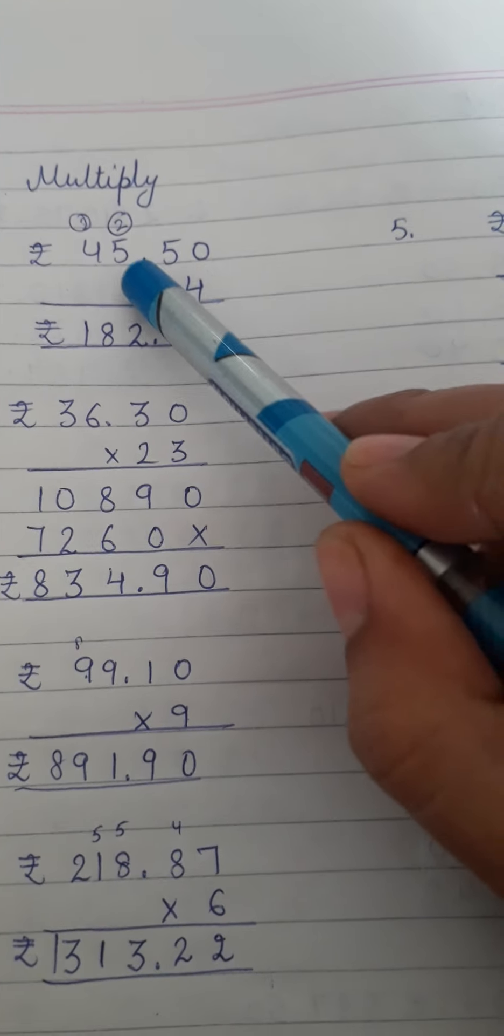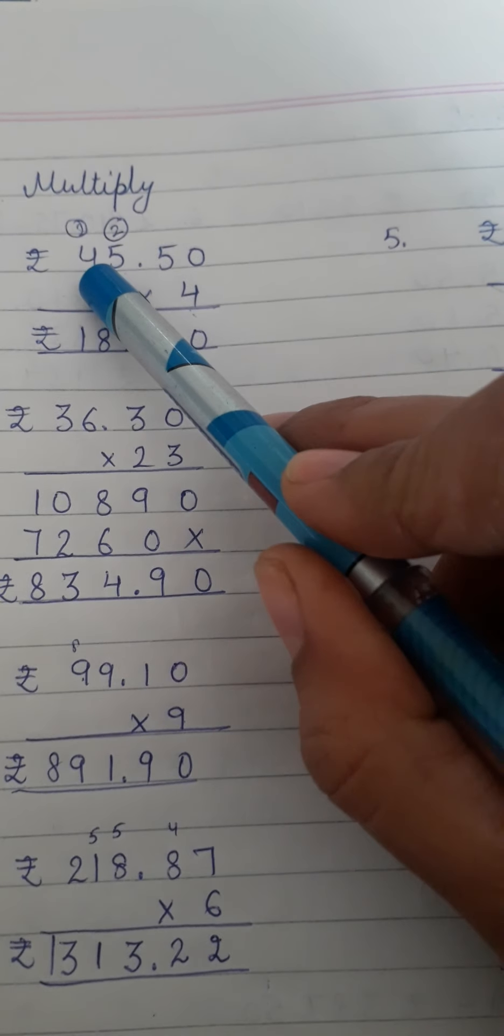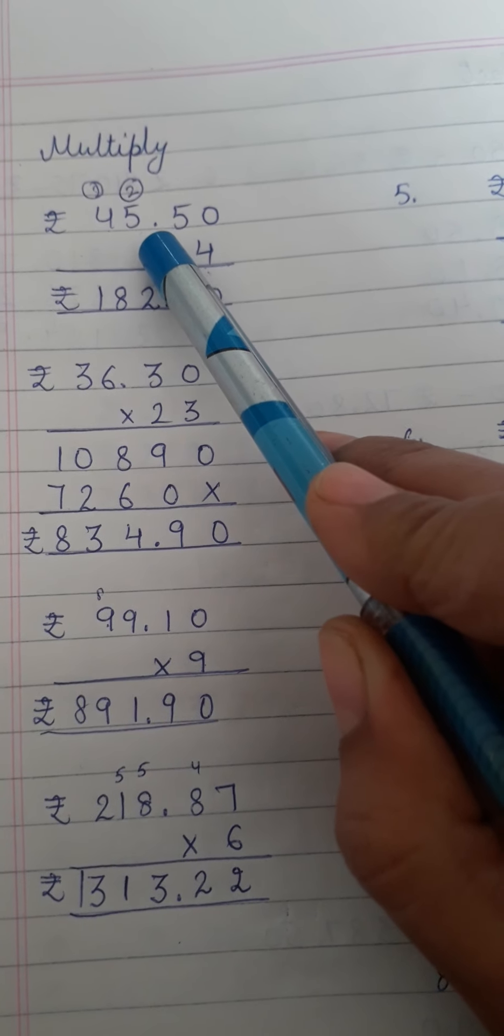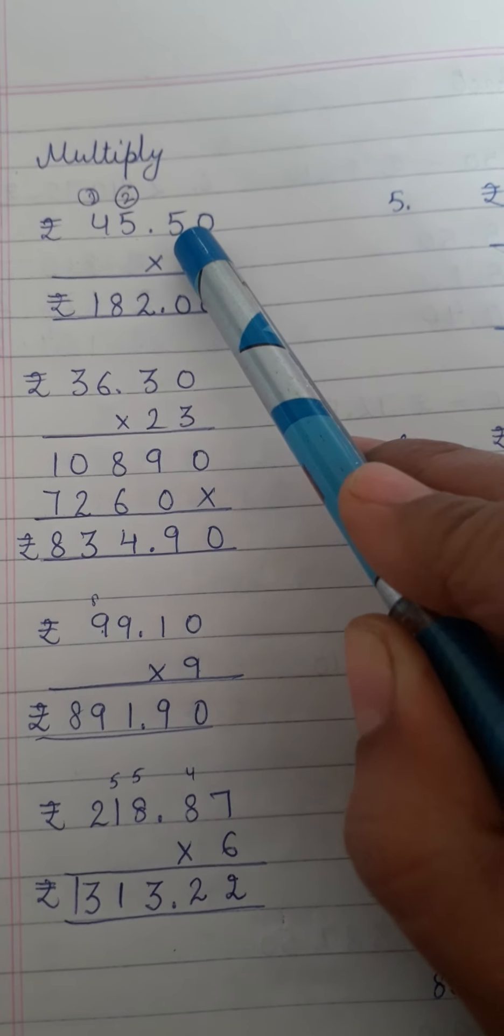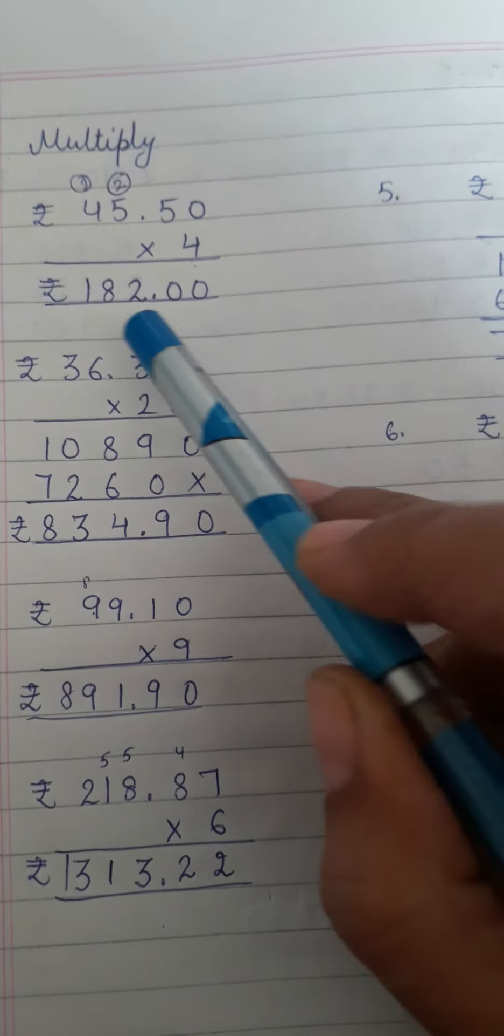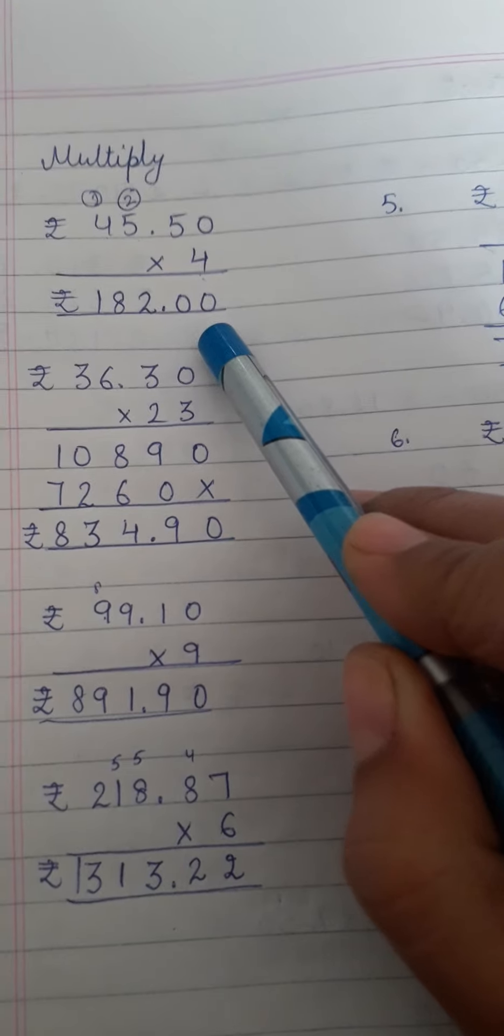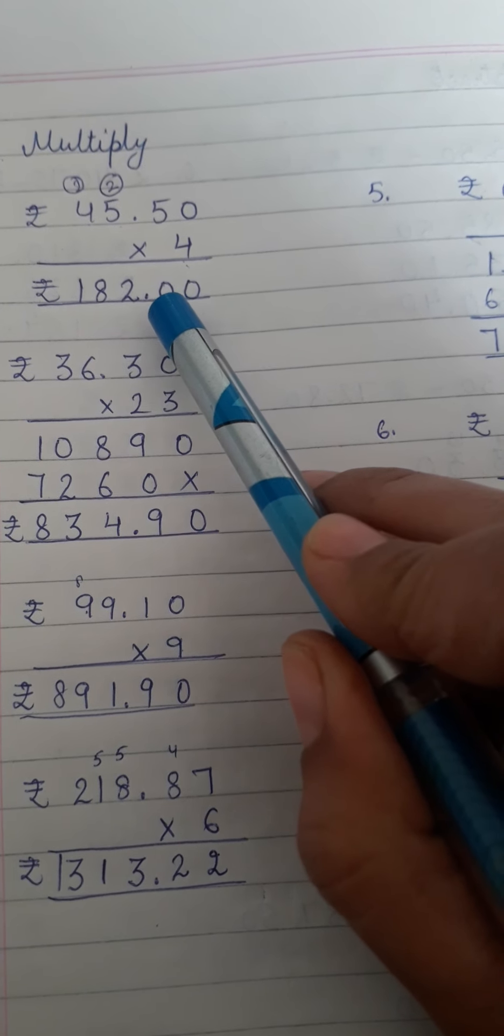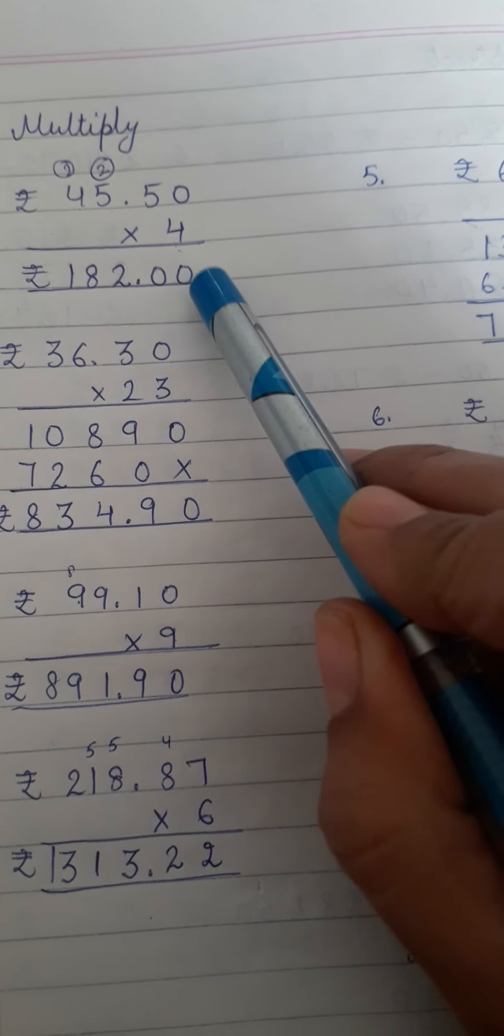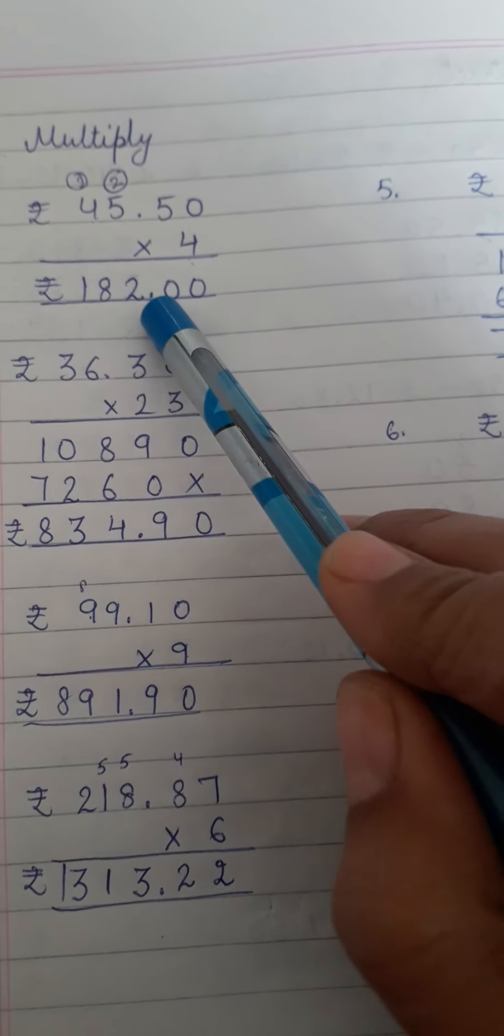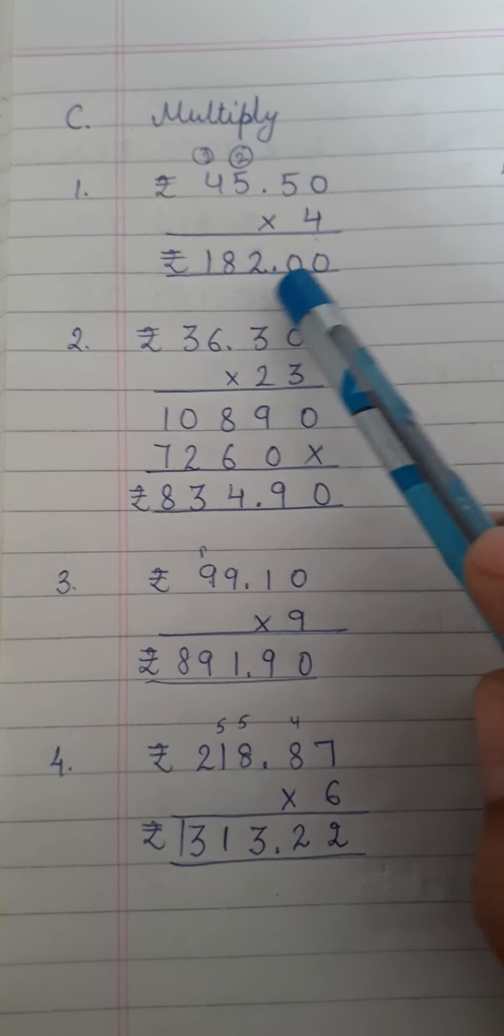Now here is a decimal point as it is 45 rupees and 50 paisa. So after decimal we have 50, we have 2 digits after decimal. So in the answer you have to put decimal before 2 digits. Start counting from right side 1, 2. Skip 2 digits and put decimal and your answer is rupees 182.